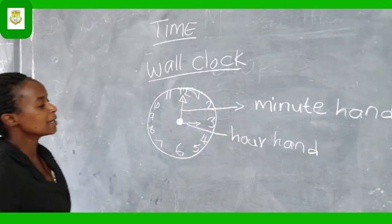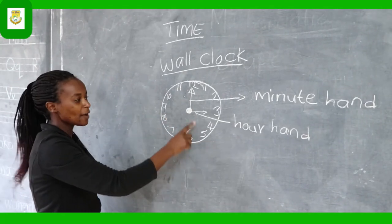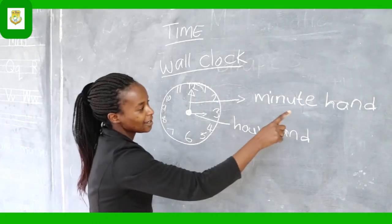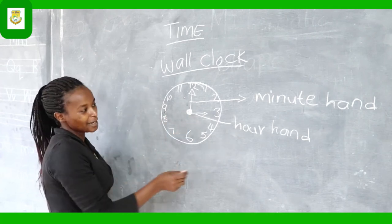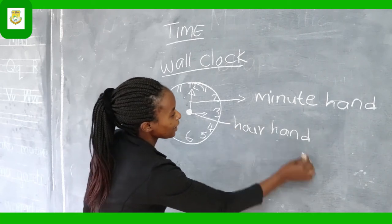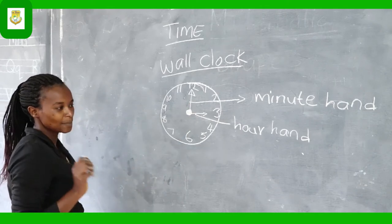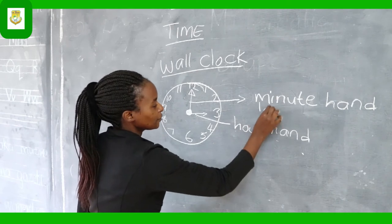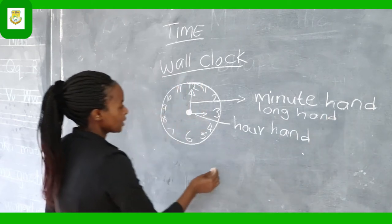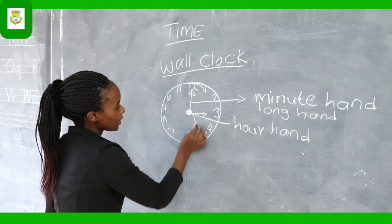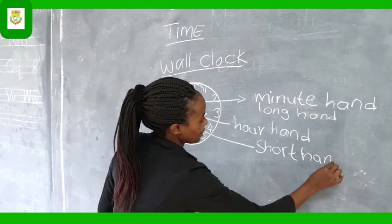So when you look at the clock, you may see that it has got two hands. One is very long and the other is very short. The one which is very long indicates the minute hand — that tells you the minutes in that hour. And the one which is very short indicates the hour, which we call the hour hand. So we have the long hand, which is the minute hand, and the short hand.